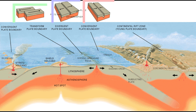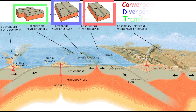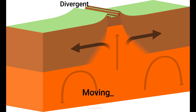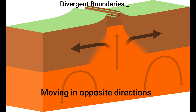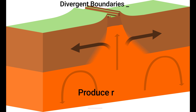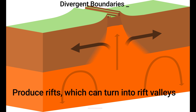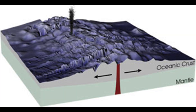Divergent, convergent, and transform boundaries are the three types of plate boundaries. Divergent boundaries develop when two plates separate from one another. They occur because of seafloor spreading in zones of ocean to ocean rifting, creating new ocean basins. Divergent boundaries in zones of continent to continent rifting may cause the formation of new ocean basins when the continent divides and expands.